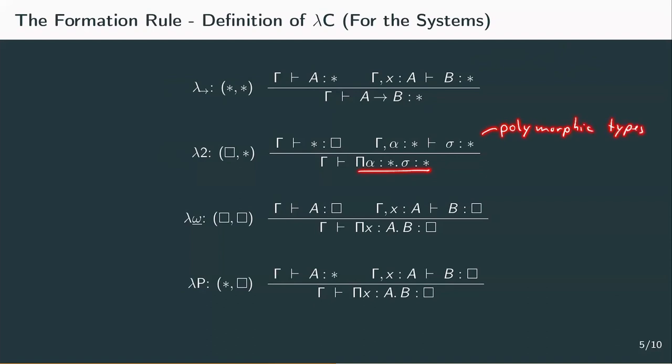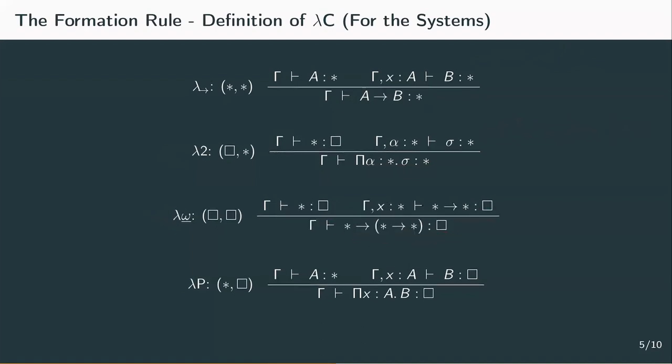Now for lambda weak omega, we need to achieve types depending on types. A is a kind and B is a kind as well. And still, the pi types are constant. Now A might be star and B might be star to star. So with the rule, we can conclude star to star to star is box. This gives us proper constructors which are the basis for types depending on types.